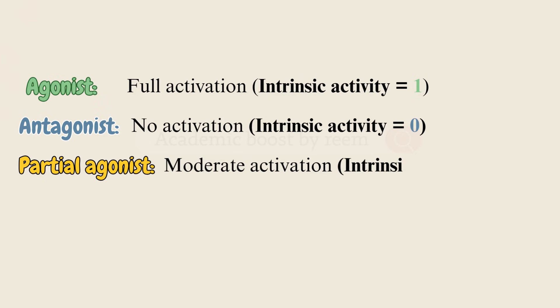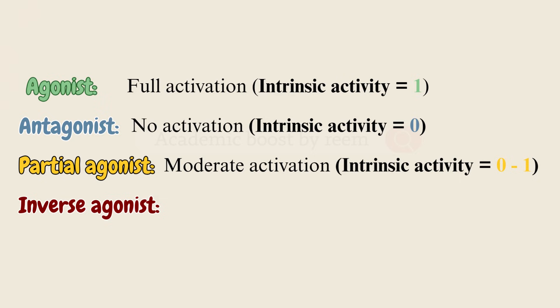Quick recap: agonist causes full activation with intrinsic activity equal to one. Antagonist causes no activation with intrinsic activity equal to zero. Partial agonist causes partial activation with intrinsic activity between zero and one. Inverse agonist reduces receptor activity below its basal level with intrinsic activity of less than zero.